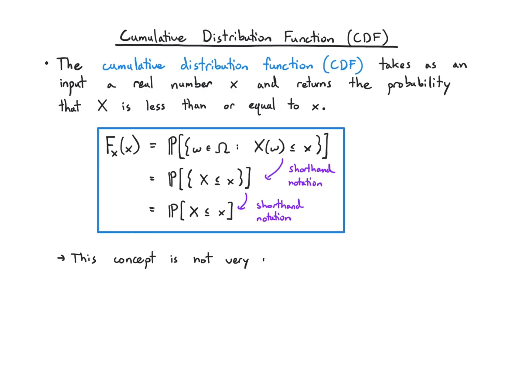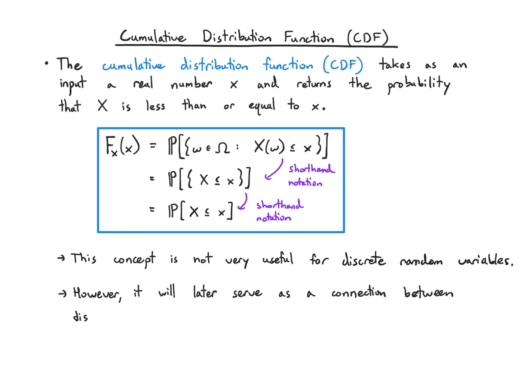This concept is not very useful for discrete random variables, so why bother introducing it? Well, later on it's going to serve to connect what we learn about discrete random variables to continuous random variables. Continuous random variables can be a little counterintuitive, and it's really helpful to carry over intuition from discrete random variables to get started. So it's useful to learn what the CDF is doing here, so that when you see it in the continuous case, it'll make more sense.